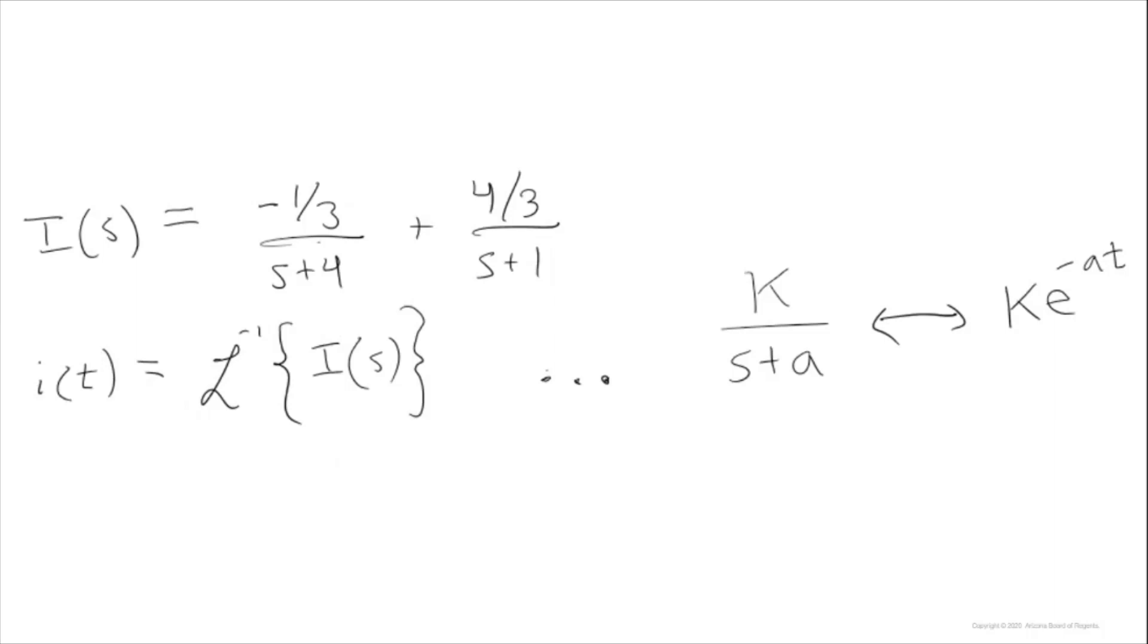Now that we have A and B, we can write I of S in a form that is easy to take the inverse Laplace transform of. Looking through a table of Laplace transform pairs, we should find this pair here. This is all we need to find the inverse Laplace transform.